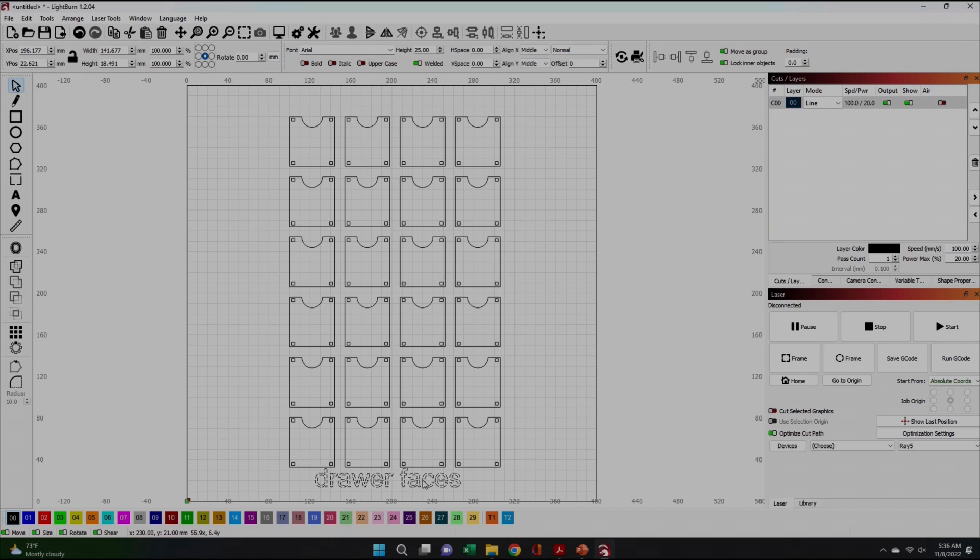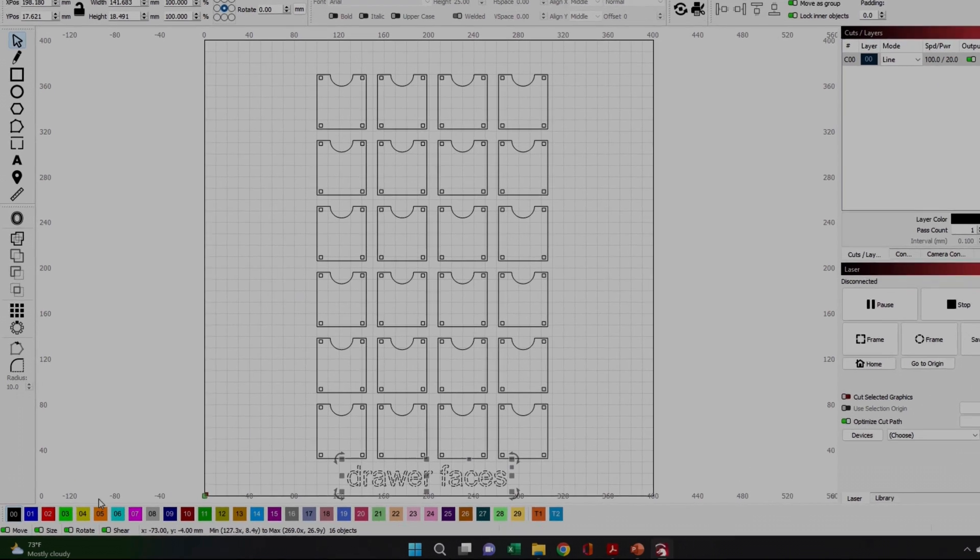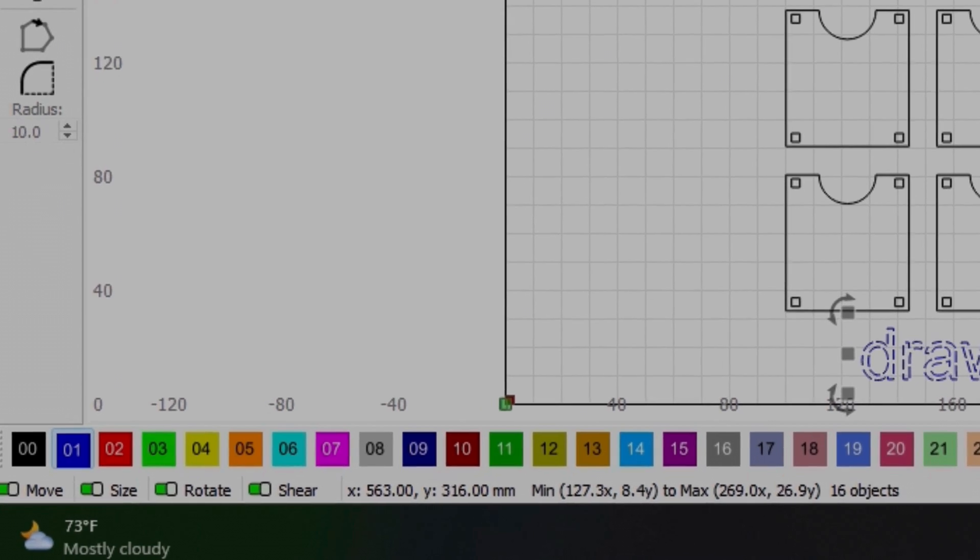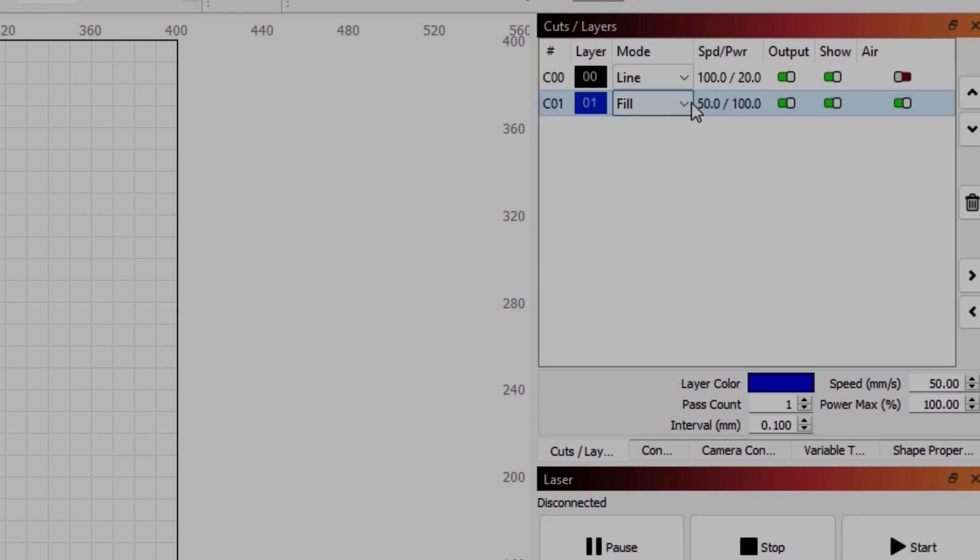I'm still learning Lightburn, but on this project I figured out how to create different layers. All the drawer faces are going to be cut, but I only want to engrave the label. I highlighted what I wanted to engrave and clicked the layer button on the bottom. This gave me separate cut layers with which I could assign separate instructions.